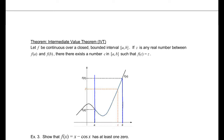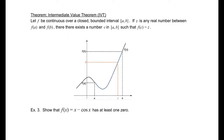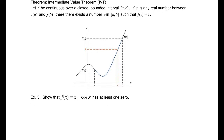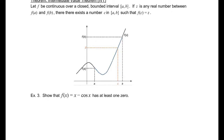The most common use of this theorem is to determine zeros or solutions. Show that f of x equals x minus cosine x has at least one zero. What we need is to find a point where the function is less than zero and a point where it's greater than zero — the idea being that if it's negative at some point and positive at some point, and the function is continuous, there has to be a zero in between. First, we want to notice that this is continuous — it's a sum of a polynomial and a trigonometric function — so this is continuous on the entire real line.